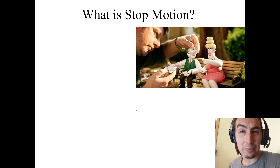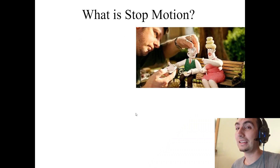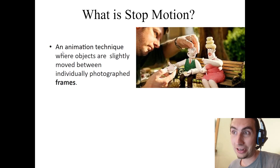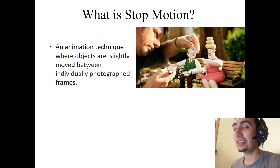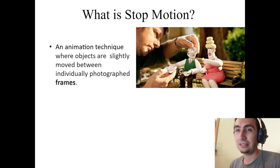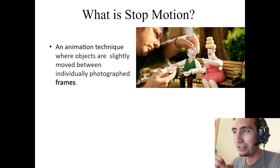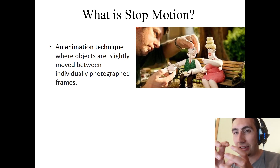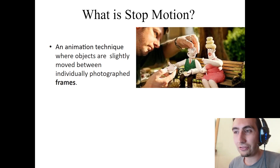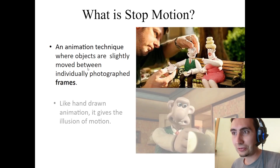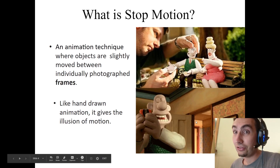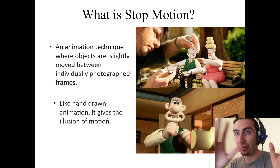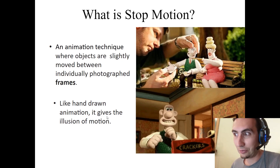What is stop motion? It's an interesting one. It's an animation technique where objects are slightly moved between individually photographed frames. It's like other animations, but instead of being drawn, it's simply objects that are moved just a tiny bit each frame. Like hand-drawn animation, it gives the illusion of motion. An example is Wallace and Gromit.